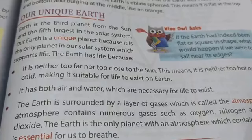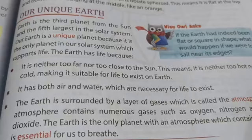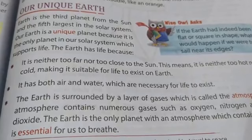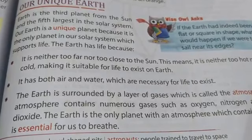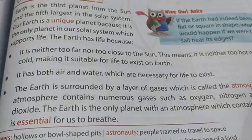Now let us understand why the Earth is unique from the other planets. The Earth is the third planet from the sun and the fifth largest in the solar system. It is unique because it has life on it, and this is because of the following reasons.